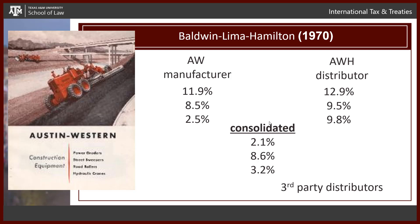Especially when you see the last row: 2.5% on the American side, 3.2% on the group side, but 9.8% — actually an increase — on the foreign side. The judge is like: this doesn't look right. The optics are not good, taxpayer.